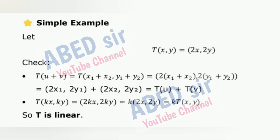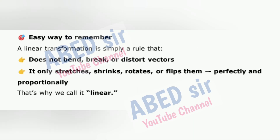Simple example: let T(x,y) = 2x + y. Check: T(u + v) satisfies the property, so T is linear. Easy way to remember: a linear transformation is simply a rule that does not bend, break, or distort vectors. It only stretches, shrinks, rotates, or flips them perfectly and proportionally. That's why we call it linear.